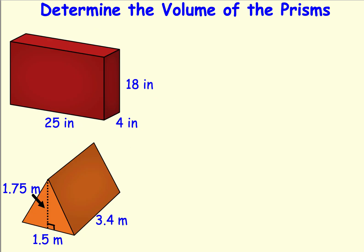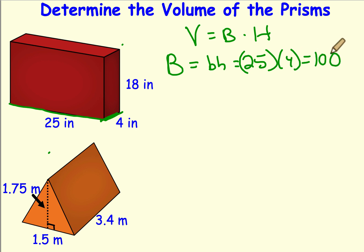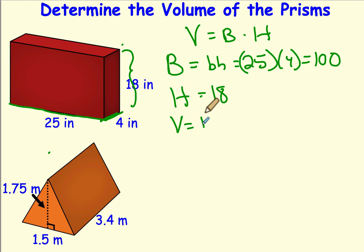Here we have two other prisms: a rectangular prism and a triangular prism. Volume is still area of the base times the height of the prism. For the rectangular prism, it doesn't matter which face you choose as the base. Using the bottom rectangle, which is 25 by 4, the area of the base is 25 times 4, which is 100. The height is 18 inches, so the volume is 100 times 18, which is 1,800 cubic inches.